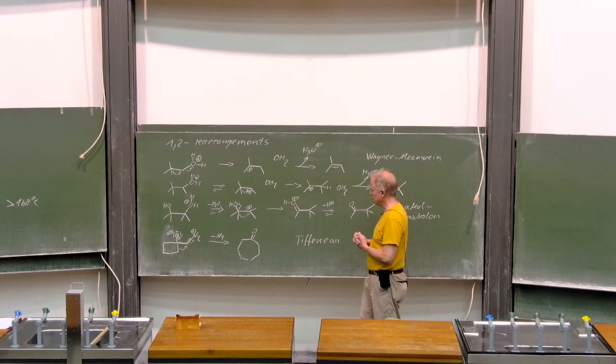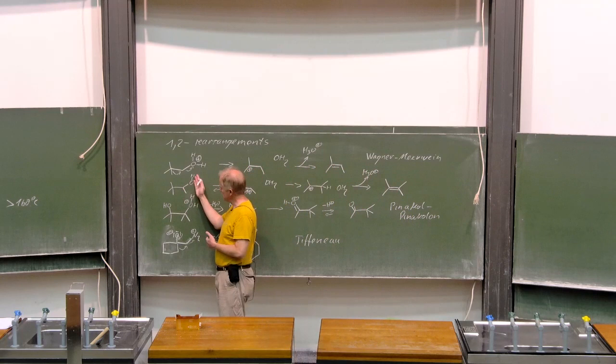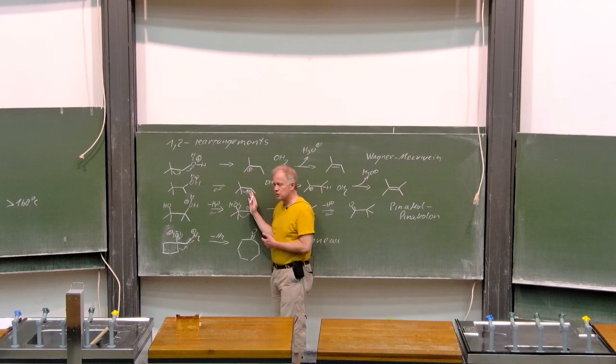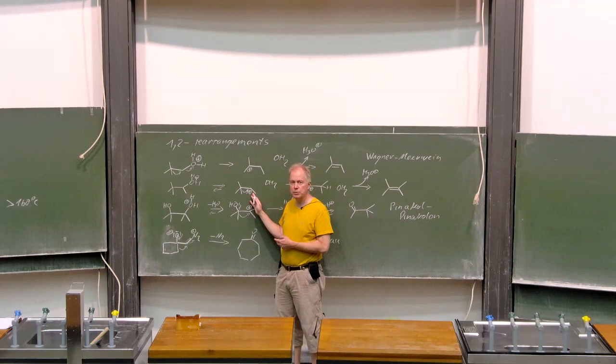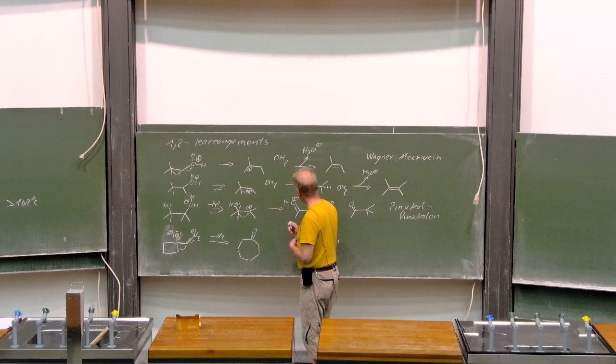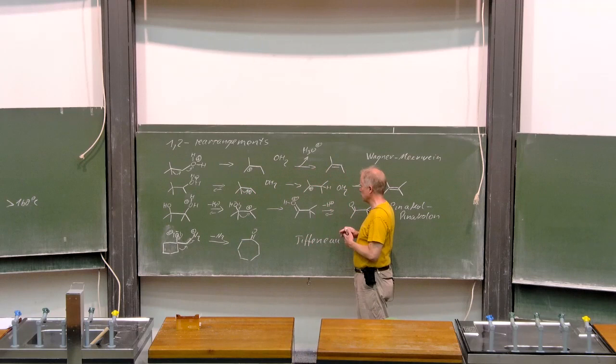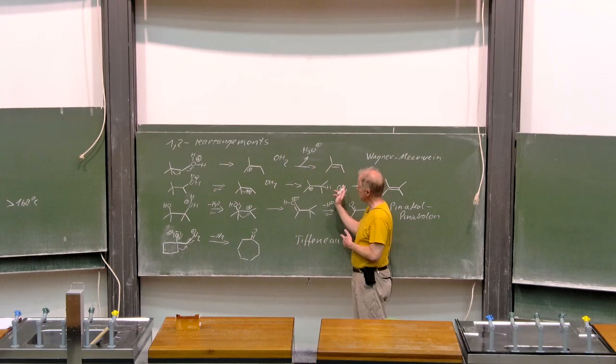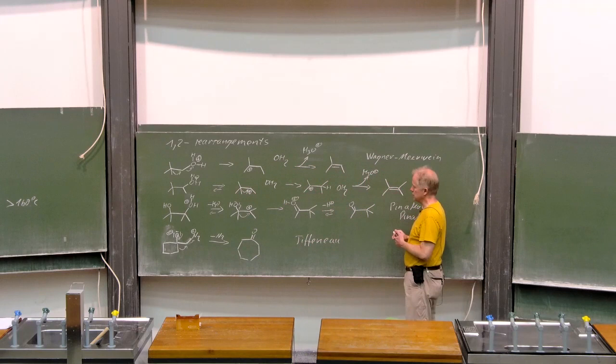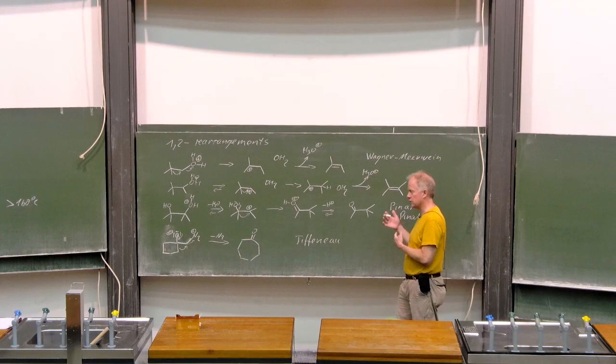If you have the alcohol at a secondary position, then the somewhat more stabilized secondary carbocation will be an intermediate and then the methyl group will migrate. It's again the same process as before. A tertiary carbocation is formed and after elimination of the proton, you end up with the olefin. Again, a Wagner-Meerwein rearrangement, but this time starting with a secondary alcohol.